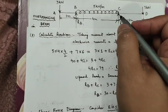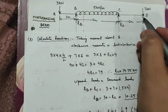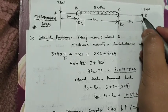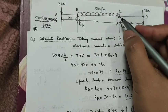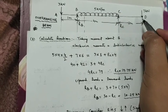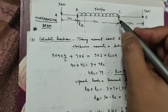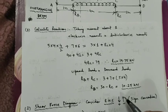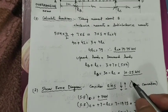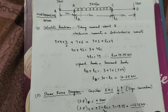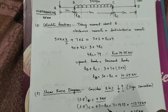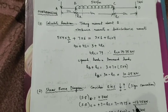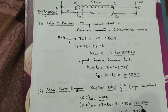At point C, from point D to C there is no load acting, hence there is no change in shear force. At point C the shear force includes the downward 7 kN plus the reaction RC. Since RC is upward it is taken as negative, so the shear force at point C is plus 7 minus RC, which comes out to minus 12.75 kN.